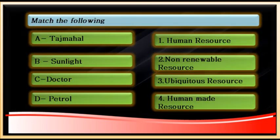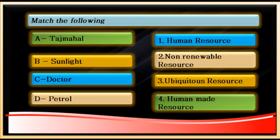Now let's do the match-the-following. Match: human resource, non-renewable resource, ubiquitous resource, human-made resource. The items to match: Taj Mahal, sunlight, doctors, petroleum. Taj Mahal is a human-made resource — built by Shah Jahan, created by humans. Sunlight is found everywhere, so it is a ubiquitous resource.